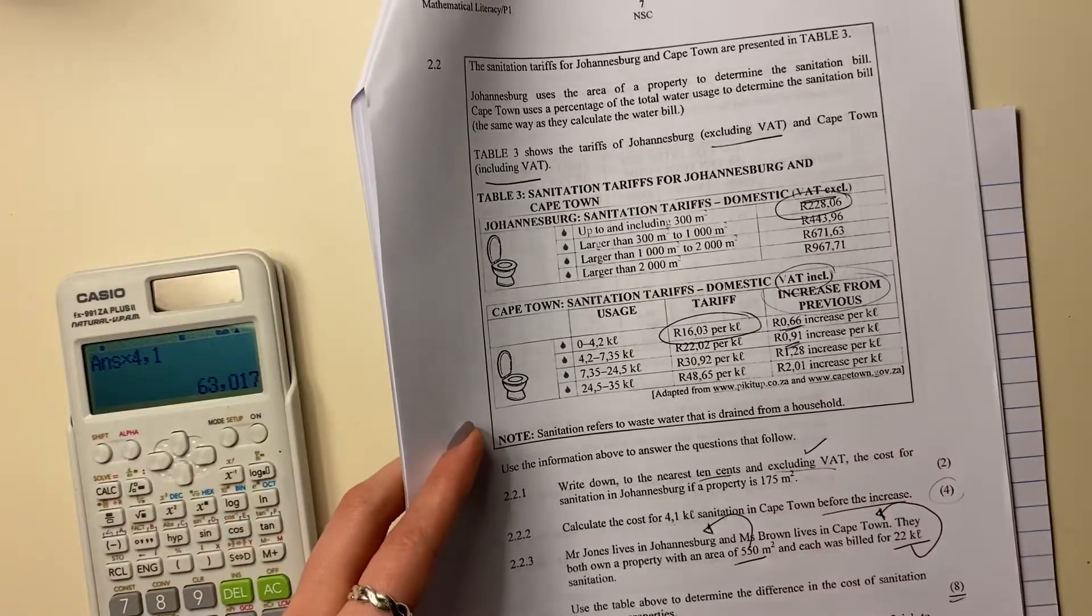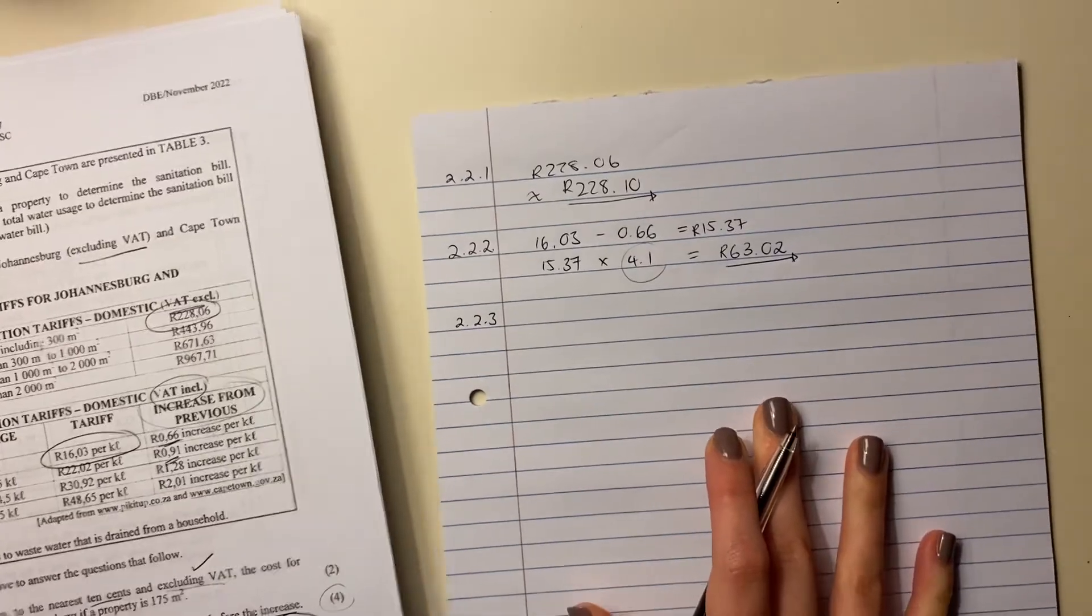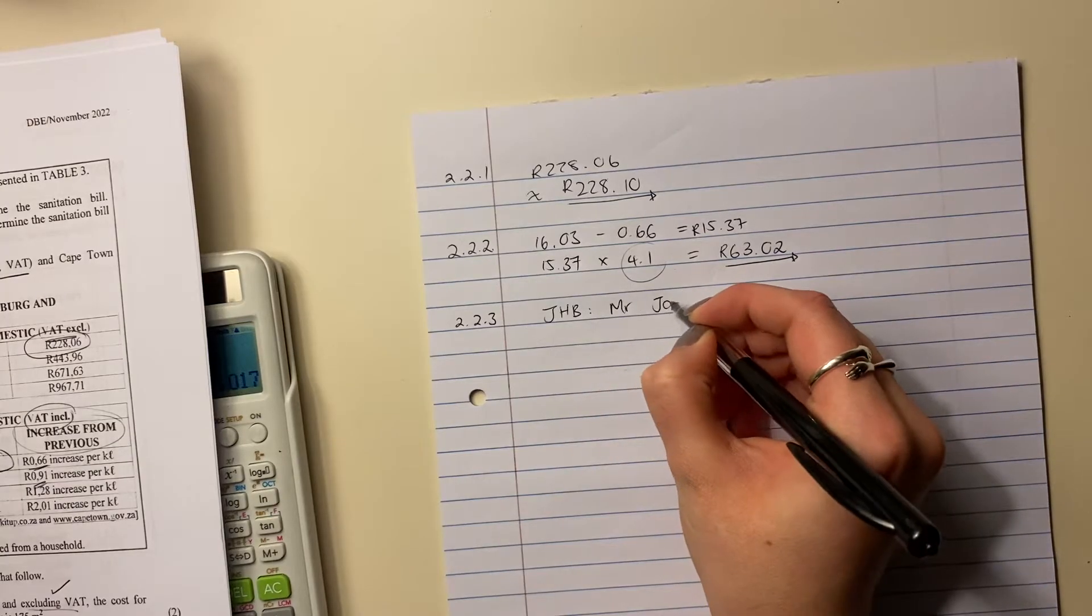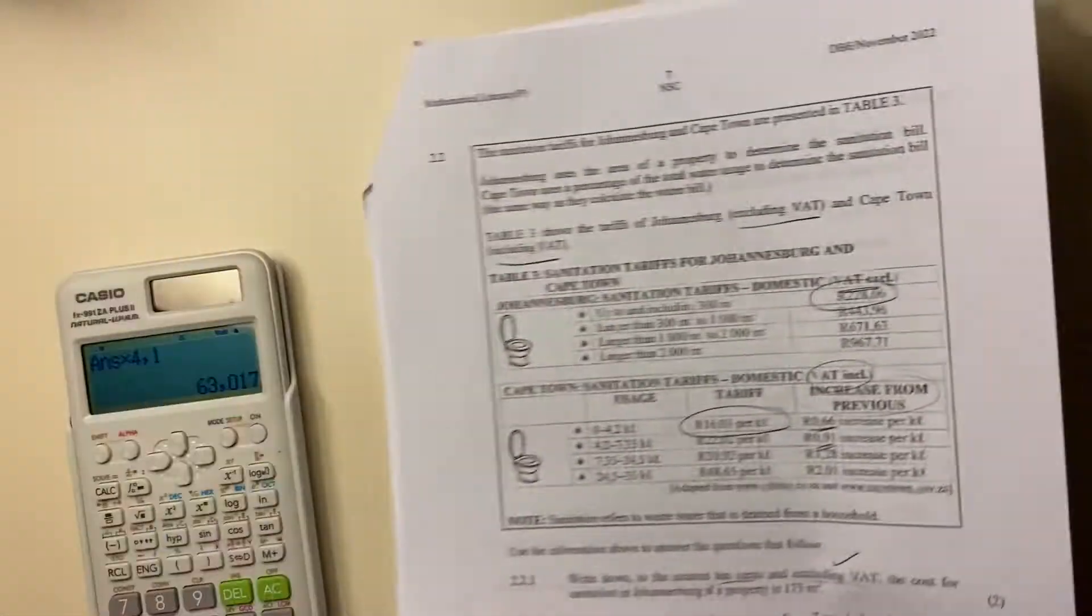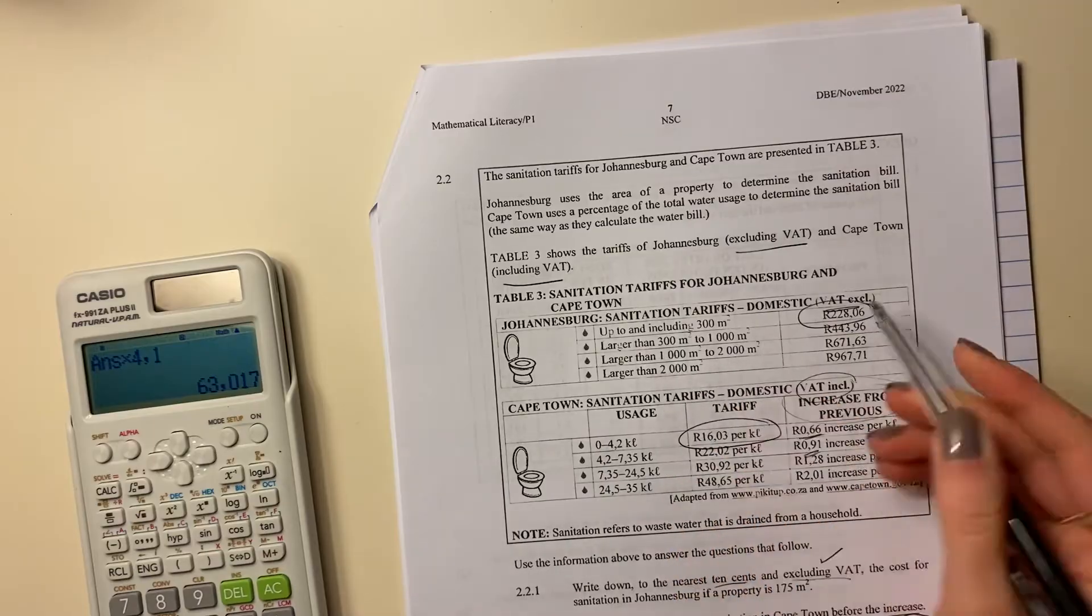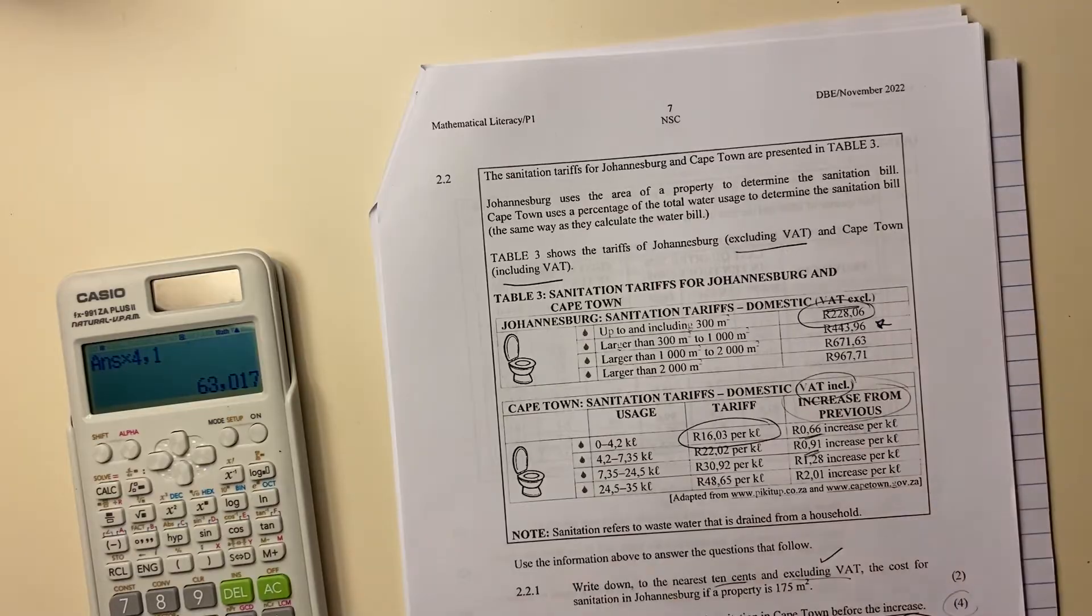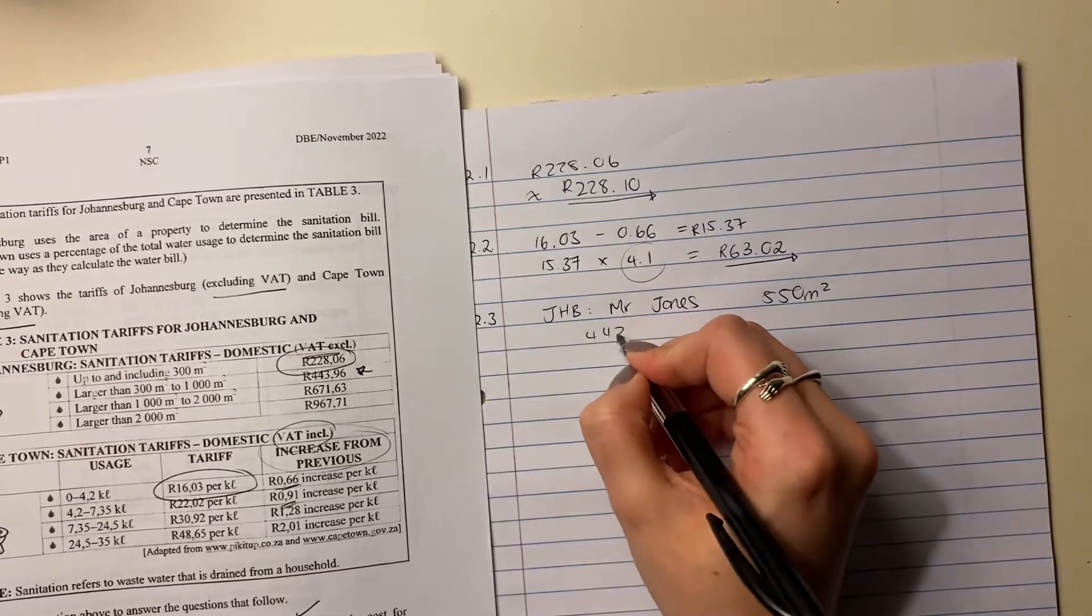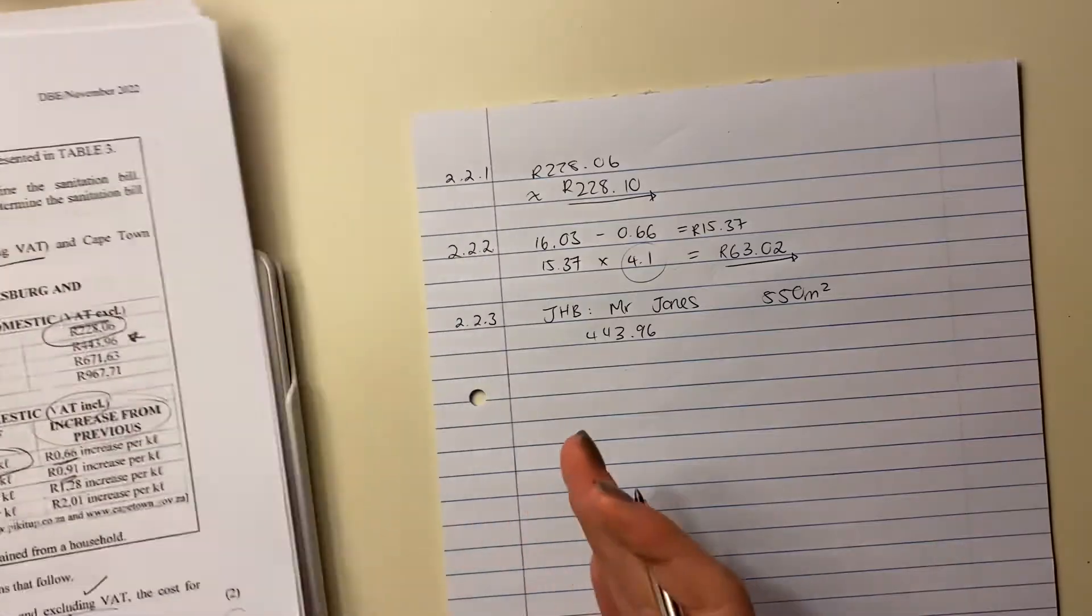Let's do this. Let's start by doing Mr. Jones. It's just a little bit easier. So we have, we're starting with JHB and that is Mr. Jones. So firstly, we know that his property is that big. So we're going to go here and we're going to say the amount he's going to pay is this amount, 443.96, because his 550 is between these two. Remember, it's not a charge per meter squared. It's just a standard charge, depending on the size, if it's in that interval. So he's going to pay 443.96. But that's excluding VAT.